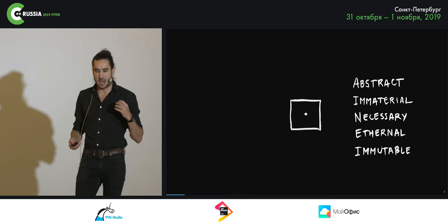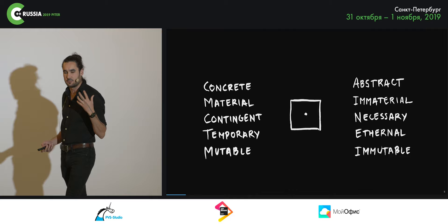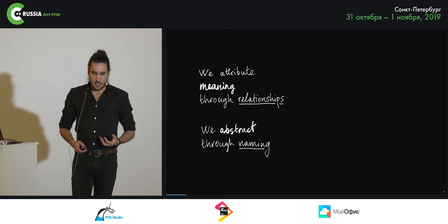In a computer, we put values in objects. Objects are boxes. They have a dimension and they occupy time and space. In this sense, they are concrete, material, contingent. They are temporary and they are mutable.